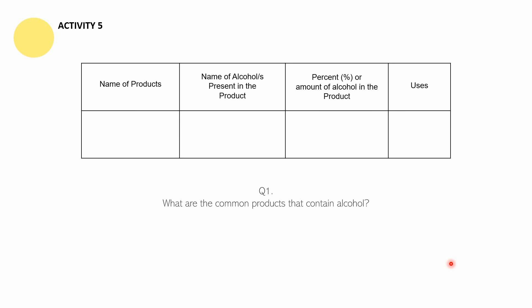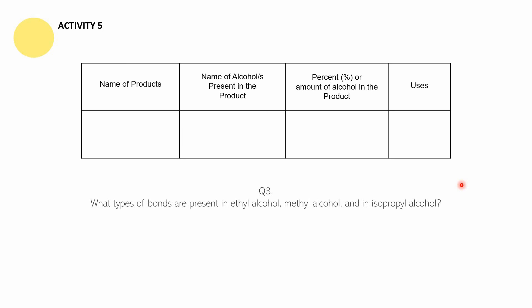The questions: What are the common products that contain alcohol? Why are alcohols important? What types of bonds are present in ethyl alcohol, methyl alcohol, and isopropyl alcohol? And what accounts for the similar physical properties of alcohols? You can pause this video if you need more time for any of these questions.